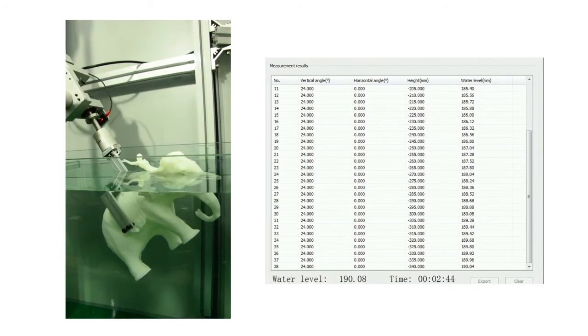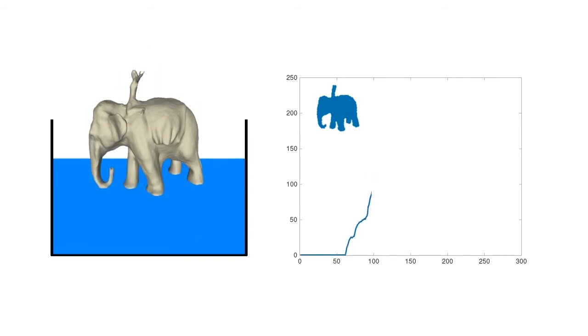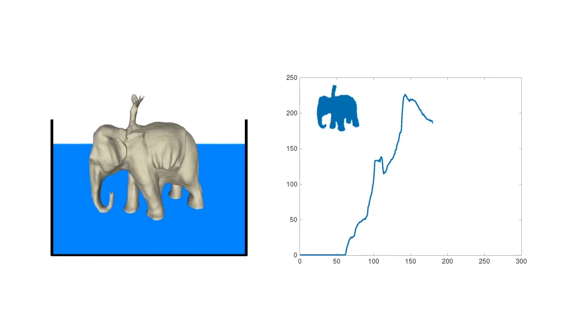By dipping an object in liquid along an axis, we can measure the displacement of the liquid volume and transform it into a series of thin volume slices of the shape.